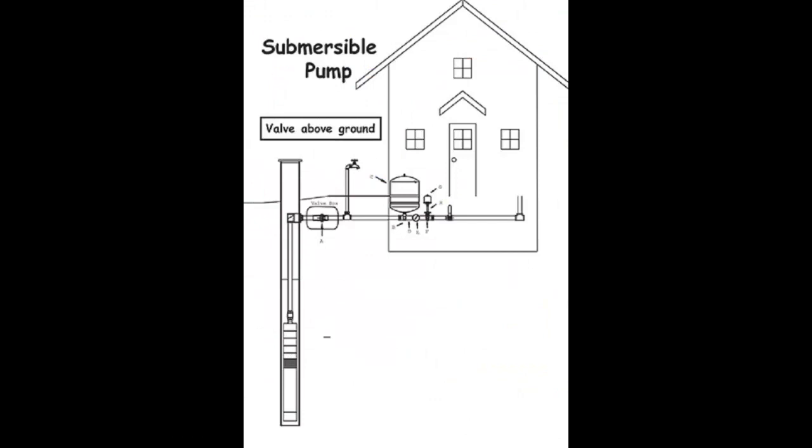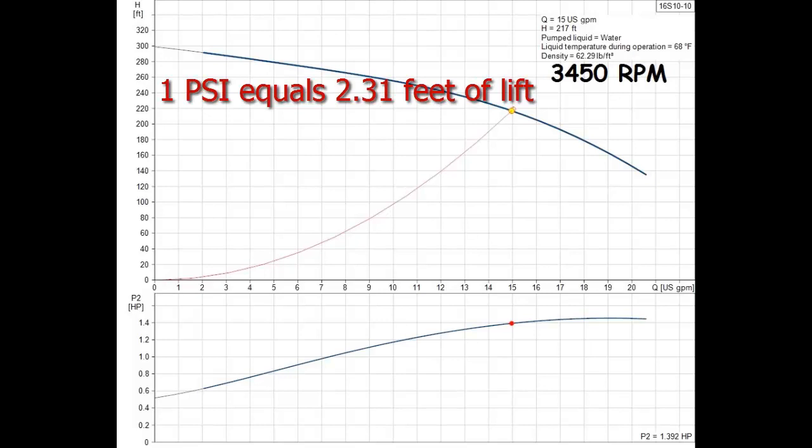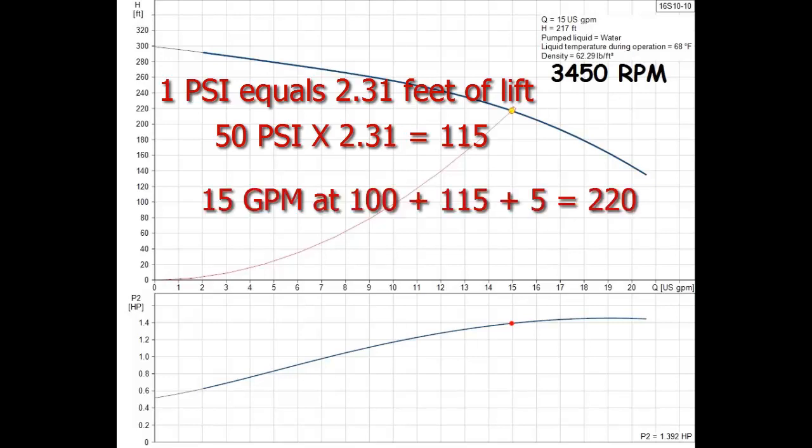Another example is a residential application which has a required demand of up to 15 gallons per minute at 50 psi and needs to lift from a well with a pumping depth of 100 feet. To a pump, one pound of pressure is the same as 2.31 feet of lift. So to get 50 psi at the faucets the pump must produce 50 times 2.31 or 115 feet of lift.